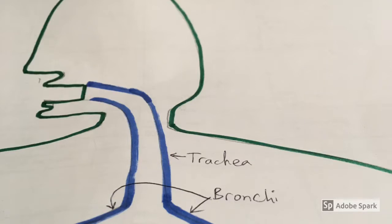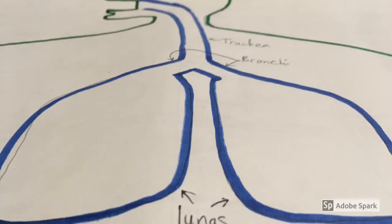Breathing involves air moving from outside your body through your windpipe or trachea and branching through two bronchi which divides the air into both of your lungs.